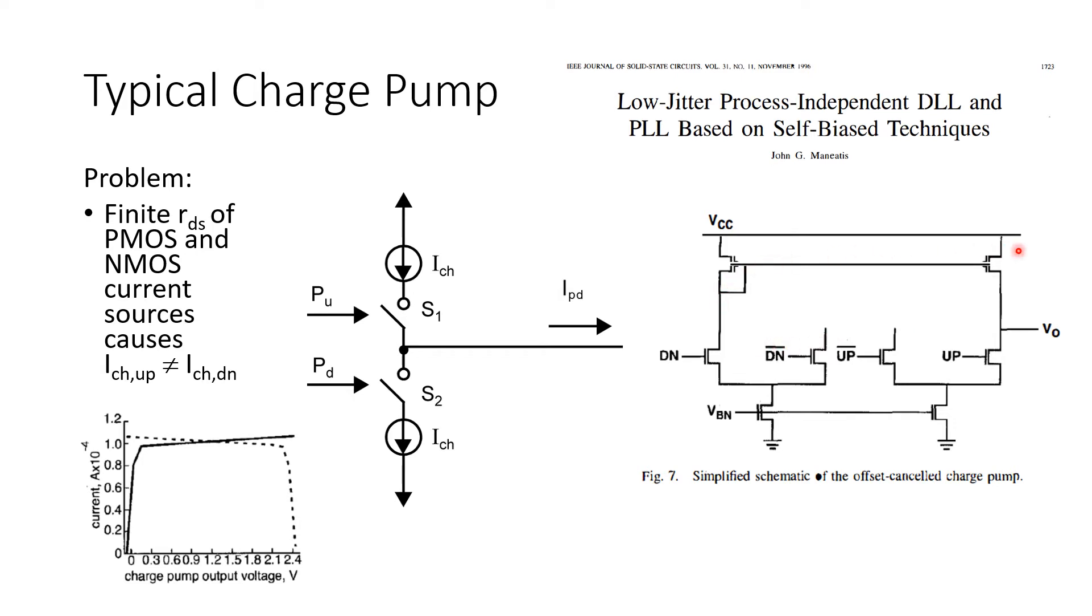This current mirror here ensures that current is either directed towards the output VO or drawn away from it depending on the polarity of these pull-up and pull-down signals. The assumption is that only one of these pull-up or pull-down signals are active at a time.